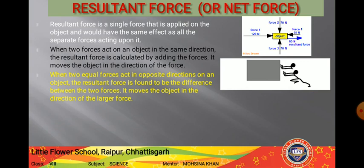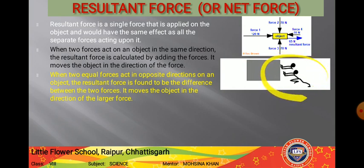So we conclude that when two forces act on an object in the same direction, the resultant force is calculated by adding both forces. The object moves in the direction in which the force is applied. As shown on screen, the object will move to the left because both forces are being applied from the left direction, and these two forces will add together.